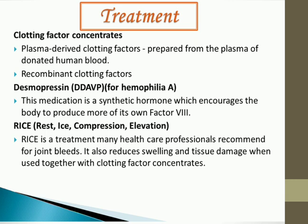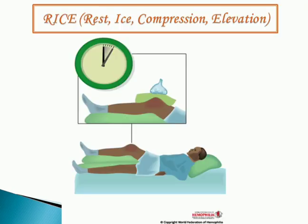Desmopressin (DDAVP) is a synthetic hormone that encourages the body to produce its own Factor 8, and is mainly used for classic hemophilia (Hemophilia A). Another highly recommended therapy is RICE — Rest, Ice, Compression, Elevation — which combined with clotting factor concentrates gives the best results, especially for joint bleeds.